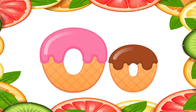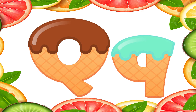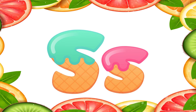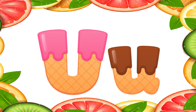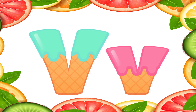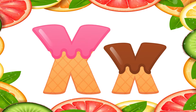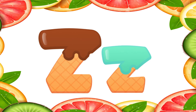N for Nest. O for Orange. P for Pineapple. Q for Queen. R for Radish. S for Strawberry. T for Tiger. U for Umbrella. V for Vegetable. W for Watermelon. X for Xylophone. Y for Yak. Z for Zebra.